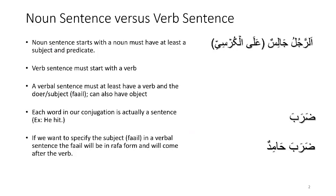In earlier lessons, we talked about a noun sentence or a nominal sentence. A nominal sentence is one which starts with a noun and must have a subject and a predicate — in other words, it must have the Mubtada and the Khabar. For example, we can say 'Ar-rajulu Jaalison' — Ar-rajulu is the Mubtada or the subject, and Jaalison is the Khabar or the predicate, meaning 'the man is sitting.' These are the two requirements of a noun sentence.